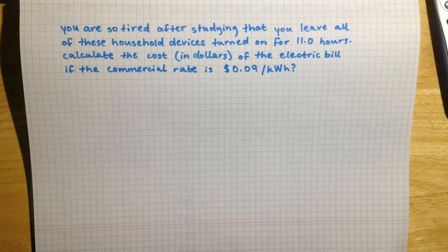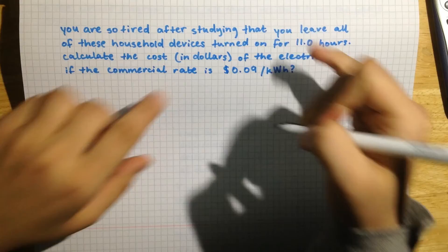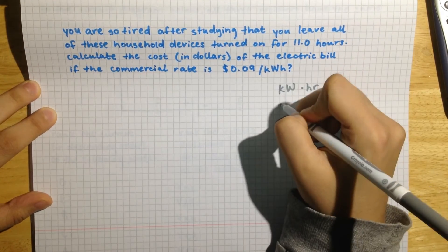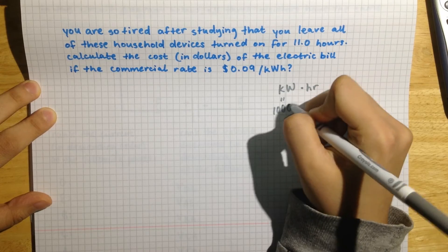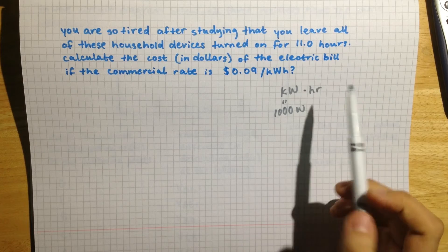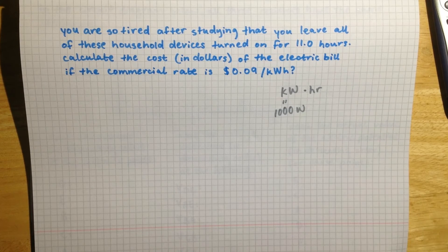Okay, so first off, a kilowatt hour is just basically a kilowatt times an hour, and a kilowatt is a thousand watts. And we don't have to worry about converting to minutes or seconds over here because they have already given us the value in hours.